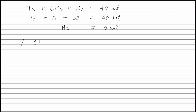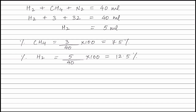Therefore, percentage of methane is equal to volume of methane that is 3 ml divided by total volume that is 40 ml into 100, and this is equal to 7.5%. Percentage of hydrogen is equal to volume of hydrogen that is 5 ml divided by total volume that is 40 ml into 100, which is equal to 12.5%. Percentage of nitrogen is equal to volume of nitrogen that is 32 ml divided by total volume that is 40 ml into 100, and this is equal to 80%.